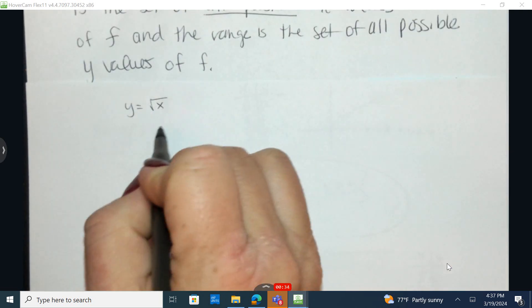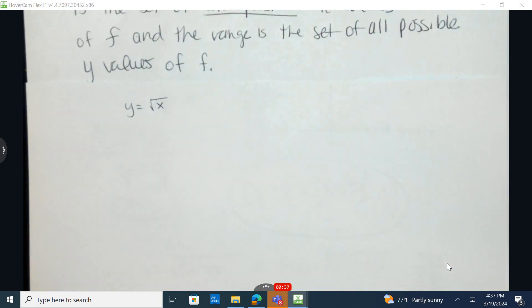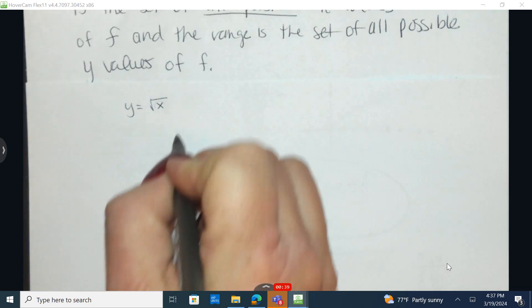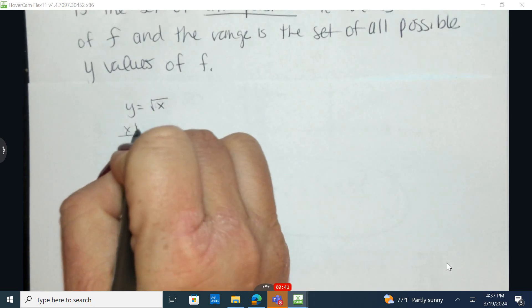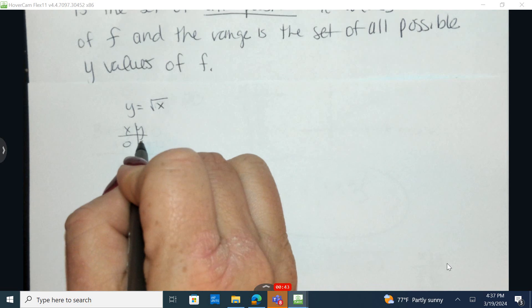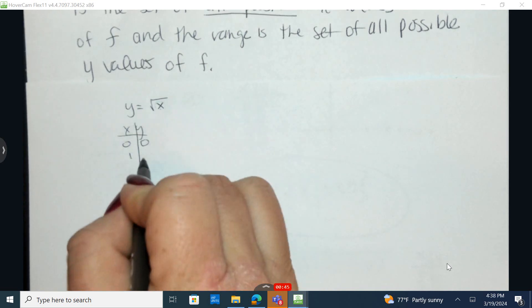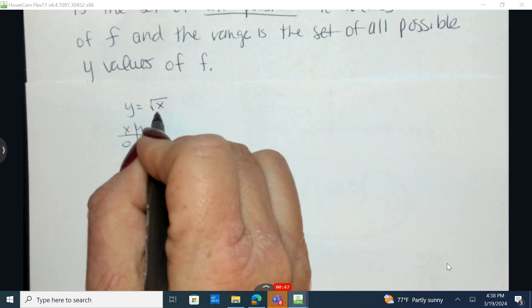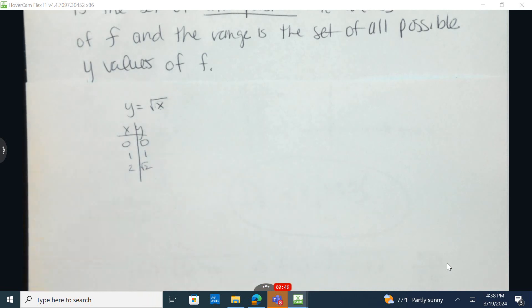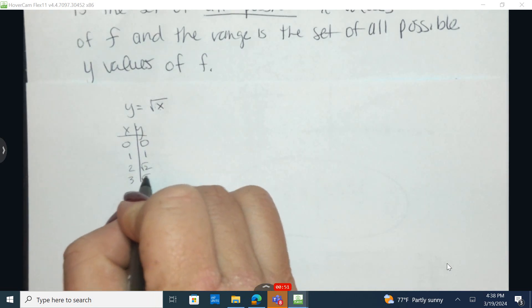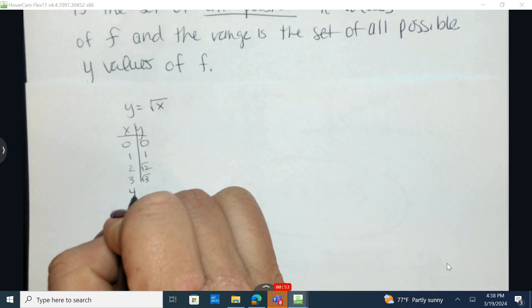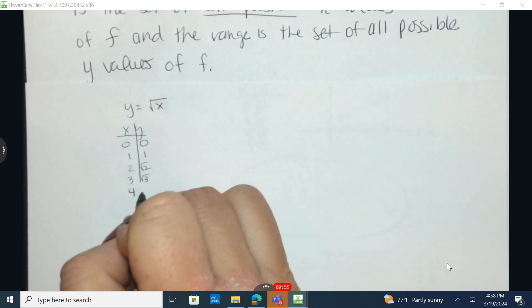In this function, remember that this value at a minimum would be zero. I could plug in zero, the square root of zero is zero. I could plug in one, the square root of one is one. I could plug in two, but the square root of two would give me an irrational number, just like the square root of three would be irrational.